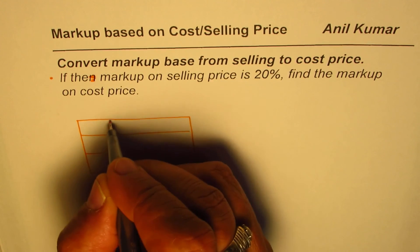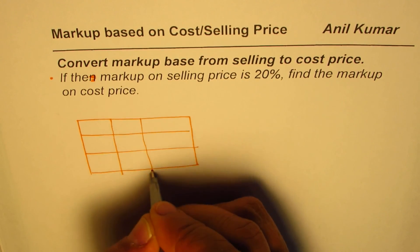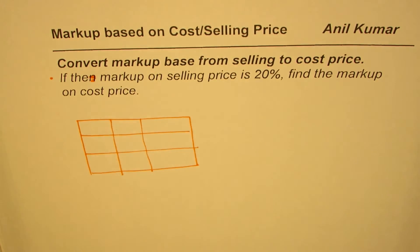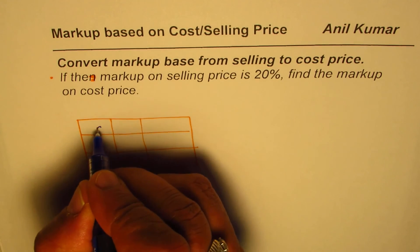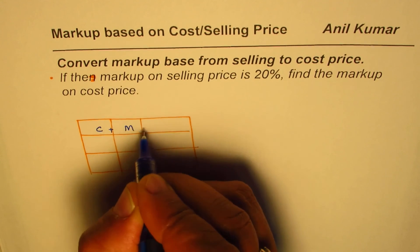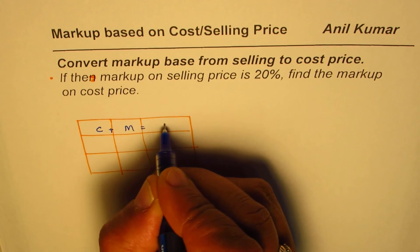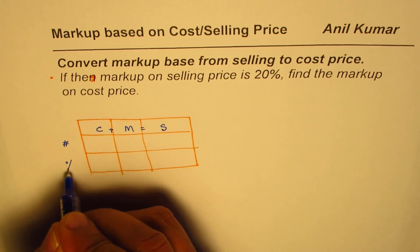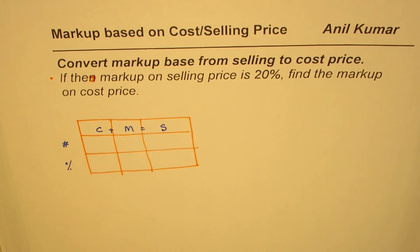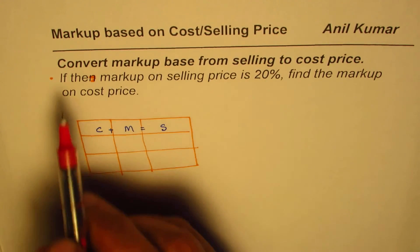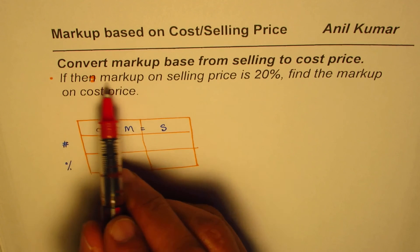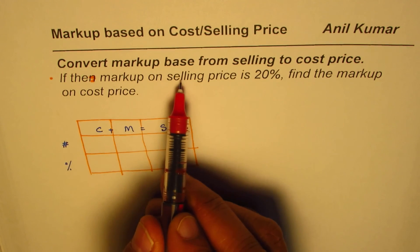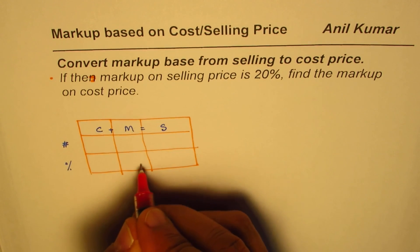Let's make our 3 by 3 table to solve this question — it gives you a visual look and helps me explain better. We know: cost plus markup equals selling price. In one column we'll write the numbers, and in the other column we'll write percentages. We are given just one value: the markup is on selling price.